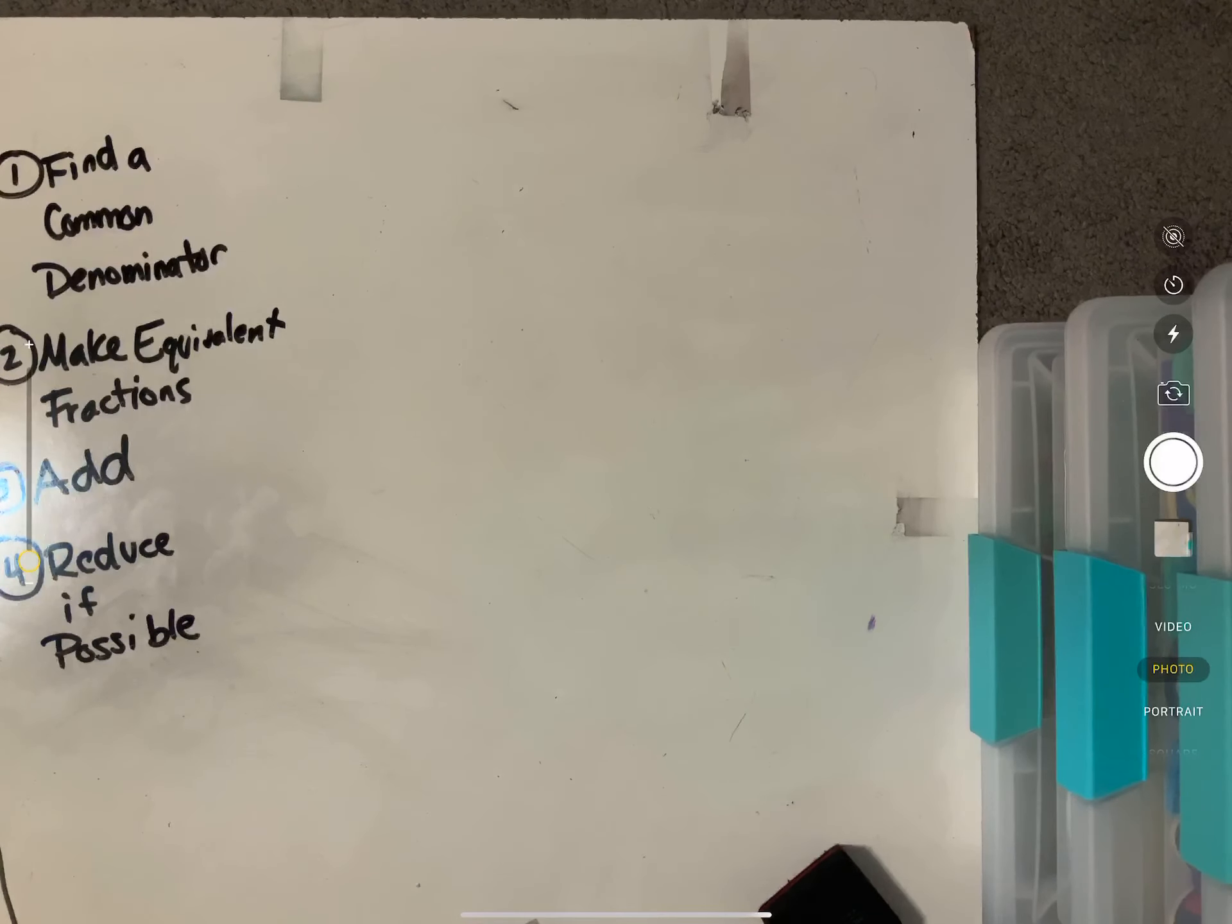Okay, everybody, we are going to continue our conversation on adding fractions with unlike denominators. So today we've got the same steps that we did yesterday. So we're going to find our common denominator, make equivalent fractions, add them up, and then reduce if possible.